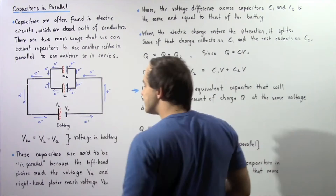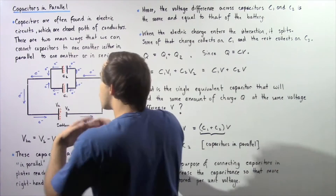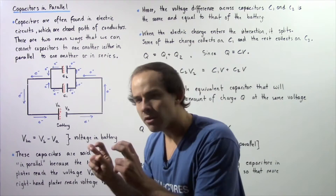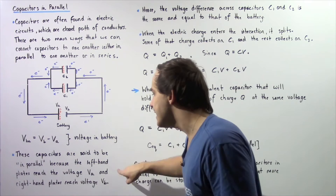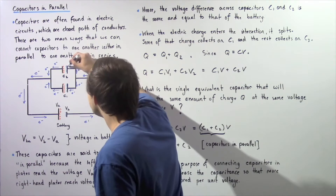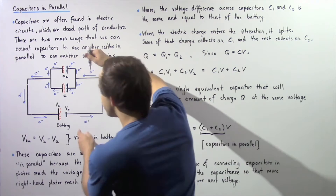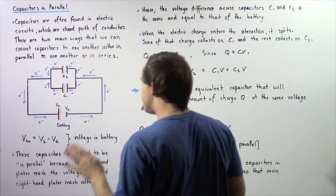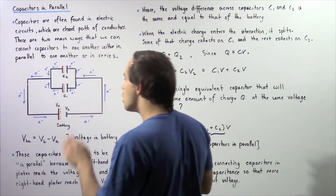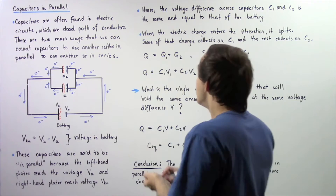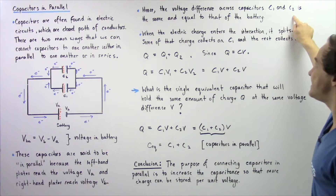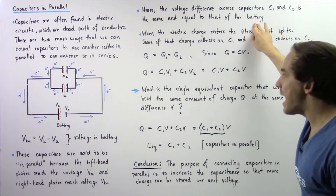The potential difference of the battery is given by taking VB and subtracting VA. These capacitors are said to be in parallel because the left-hand plates reach the voltage VA and the right-hand plates reach the voltage VB. This means the voltage across both capacitors will be exactly the same and will equal the voltage of the battery. The voltage difference across capacitors C1 and C2 is the same and equals the voltage of the battery.